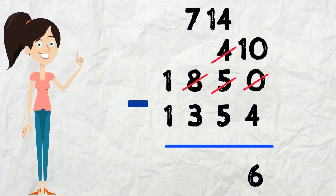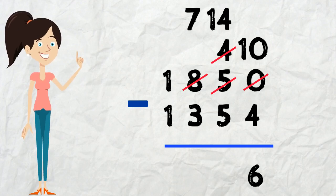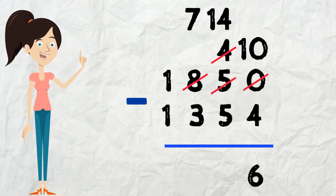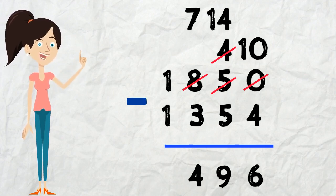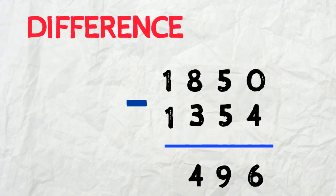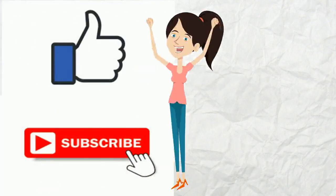Moving to the tens place: 4 take away 5 — again the top number is smaller, so we borrow from the neighboring 8, which turns into 7, and the 4 becomes 14. So 14 take away 5 equals 9. Then to the hundreds: 7 take away 3 equals 4. Then the thousands: 1 take away 1 equals 0, which we don't need to show. So the difference between 1850 and 1354 is 496.